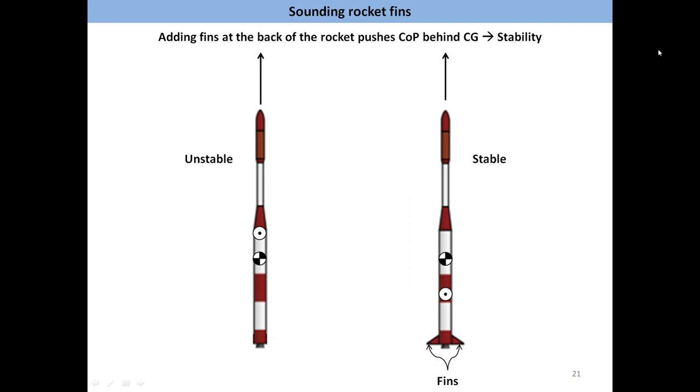We saw earlier in the example of the paper airplane that it becomes unstable when its center of gravity is behind its center of pressure. The same principle holds for rockets also. In the case of the airplane, stability was achieved by adding a mass on its front tip and thus bringing the center of gravity ahead of the center of pressure. In the case of sounding rockets, stability is achieved by attaching fins at its back end. Fins, which are basically flat surfaces, deflect or affect the airflow significantly and thus bring the center of pressure behind the center of gravity.